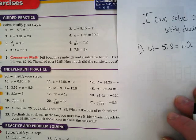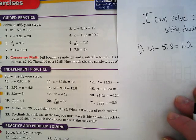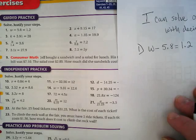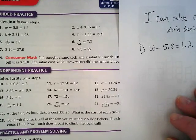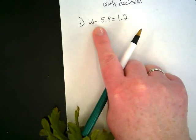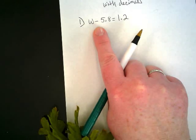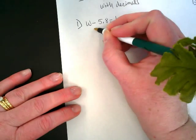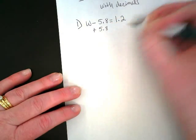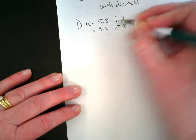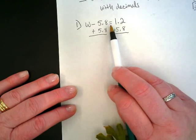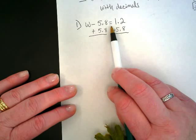We're going to start here with number one. It's actually challenging for me to write on the book so I'm going to move it aside and I'll move it back when we work on the word problem together. Let's work on number one. W minus 5.8 equals 1.2. What do we see here? Subtraction. So what are we going to do? Addition. So we're going to add the 5.8 to both sides of the equation. Remember that idea of a scale. Our center point is this equal sign. We need to balance it by doing the same thing on both sides.